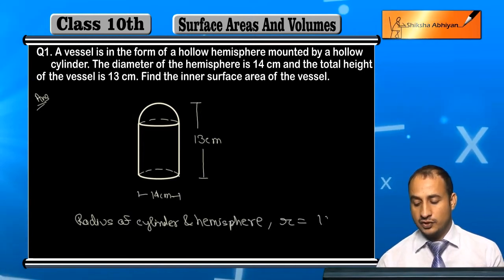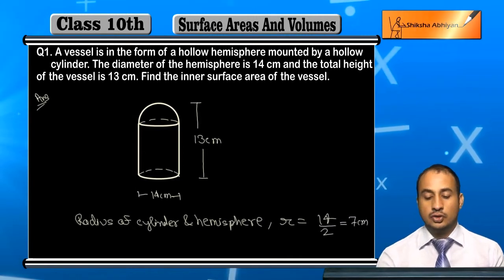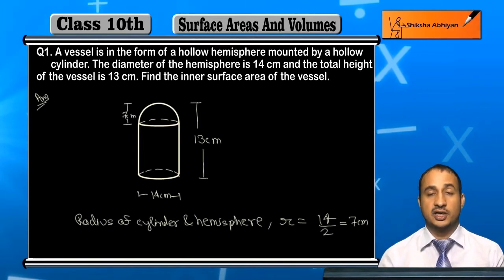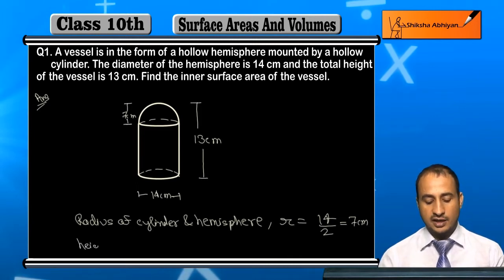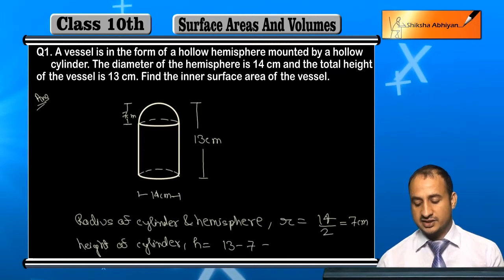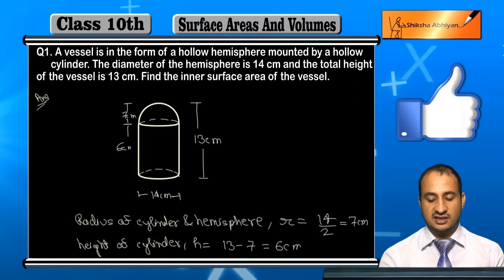This is 7 cm, from here to here. Now student, what will be the height of the cylinder? The height of cylinder will be 13 minus 7 which is 6 cm. So this is the height of 6 cm.